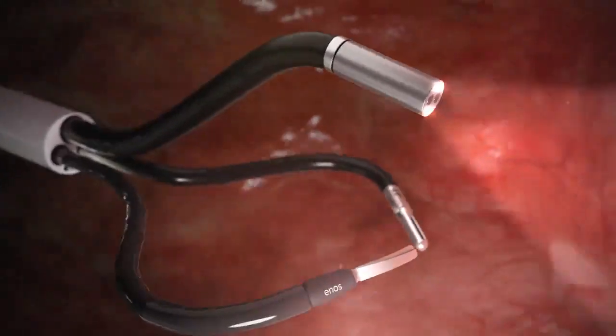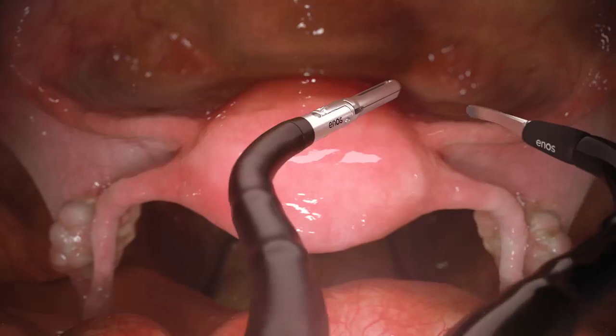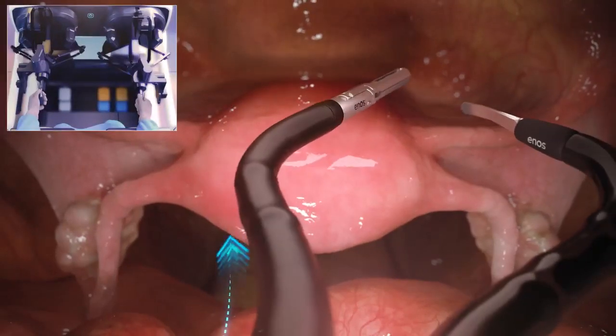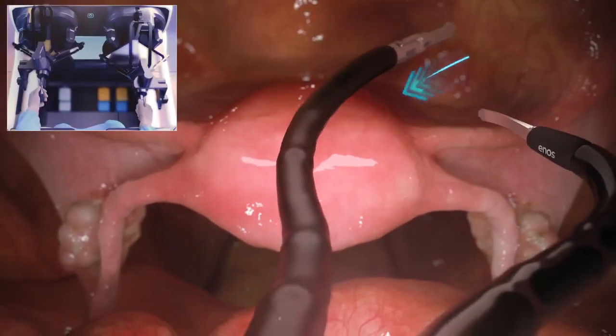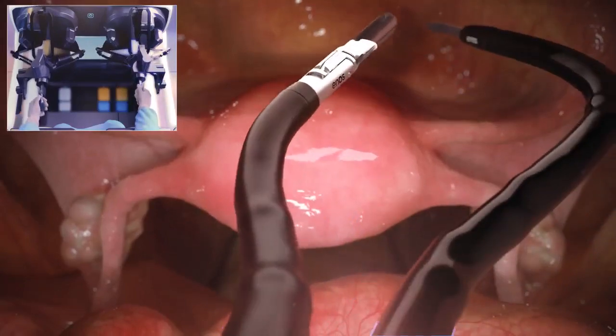The Enos system is designed to translate the surgeon's natural hand movements into fluid and dexterous instrument maneuvers.